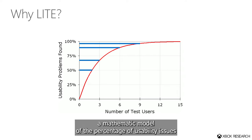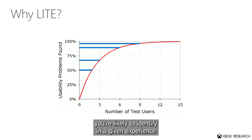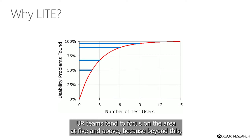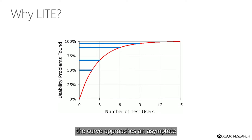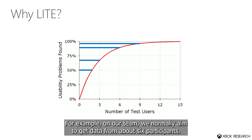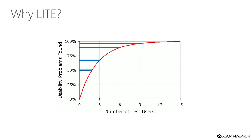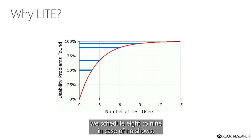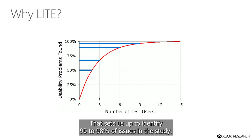Most of us are probably familiar with it, but for those who aren't: it's a mathematical model of the percentage of usability issues you're likely to identify in a given experience based on the number of participants you run. UR teams tend to focus on the area at five and above because beyond this, the curve approaches an asymptote where you've theoretically identified nearly all of the issues. For example, on our team we normally aim to get data from about six participants, and as a result, for a full usability study we schedule eight to nine in case of no-shows. That sets us up to identify 90 to 98% of issues in the study.